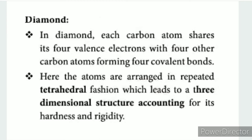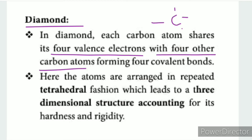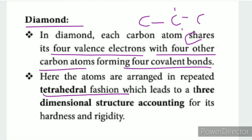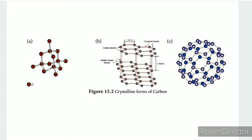Let's see diamond. Diamond is an allotrope of carbon and is crystalline. Each carbon atom uses all 4 valence electrons to form covalent bonds with 4 other carbon atoms. This repeating tetrahedral structure forms a 3-dimensional network, making diamond very rigid and hard. Each carbon forms 4 covalent bonds, giving a 3-dimensional form.